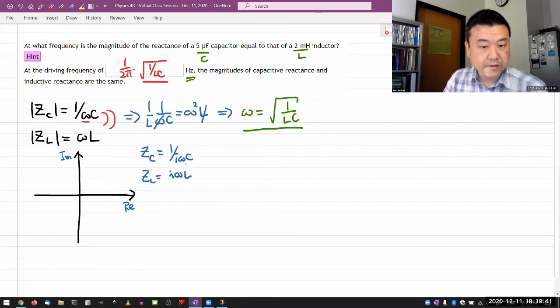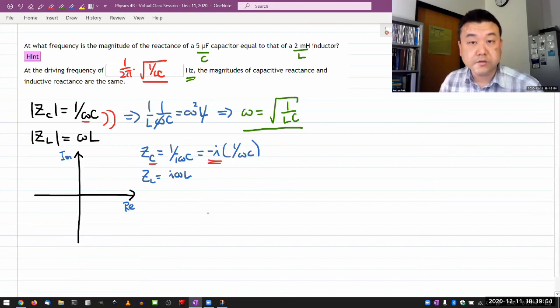Or if I rewrite it so that i is in the numerator, then this should be minus i, one over omega C. So the impedance of the capacitor goes in the negative direction along the imaginary axis. Impedance of the inductor goes in the positive direction.